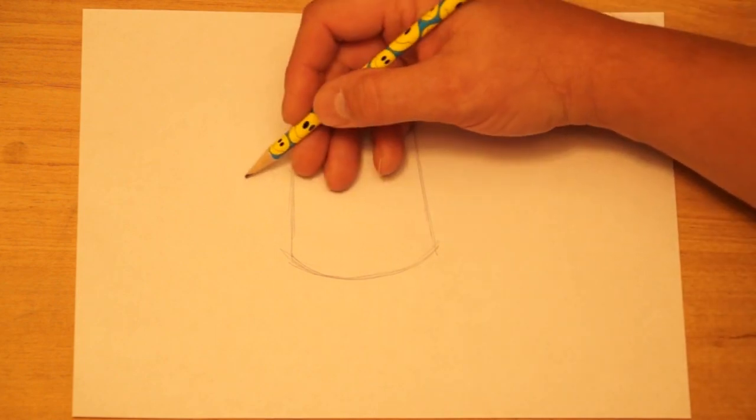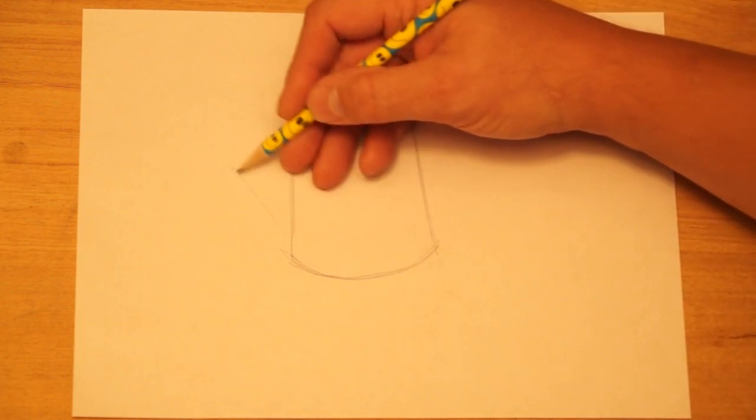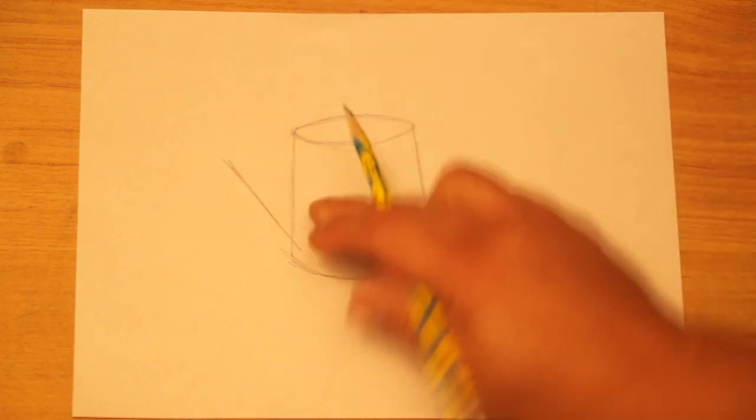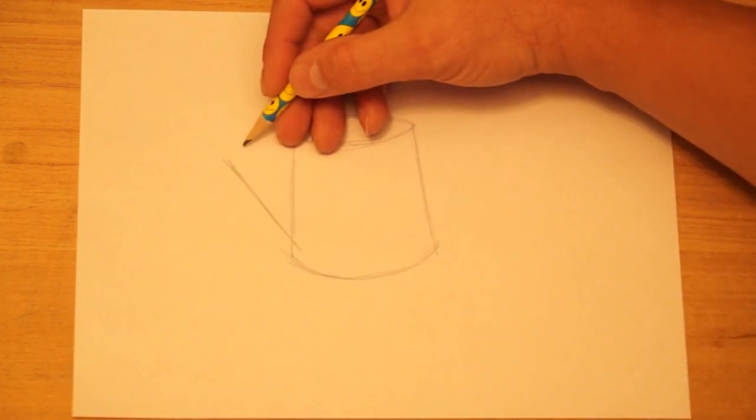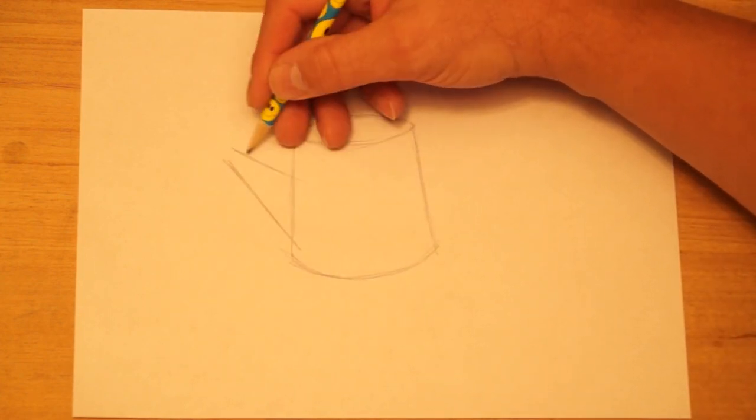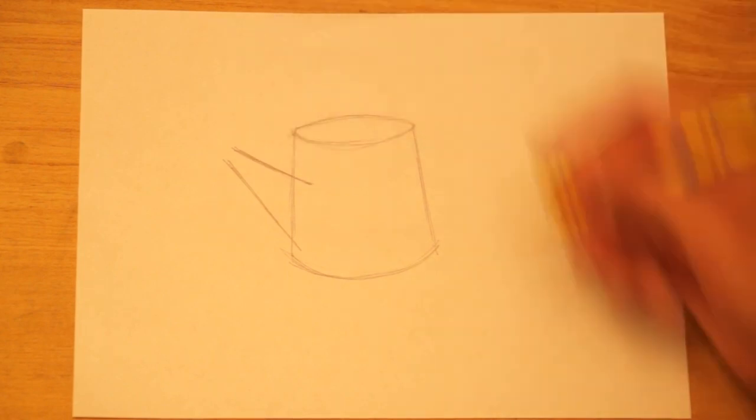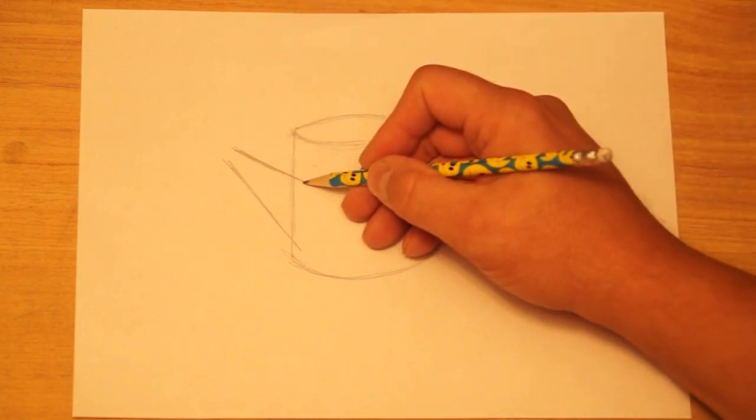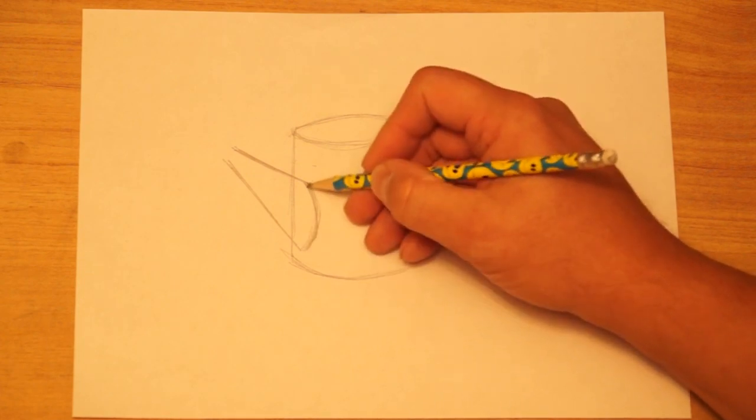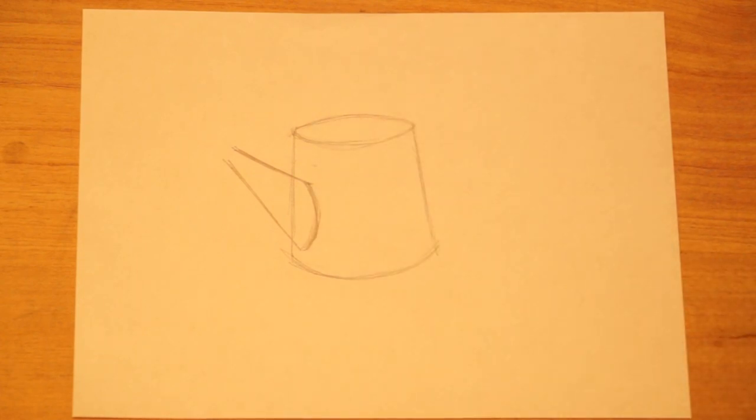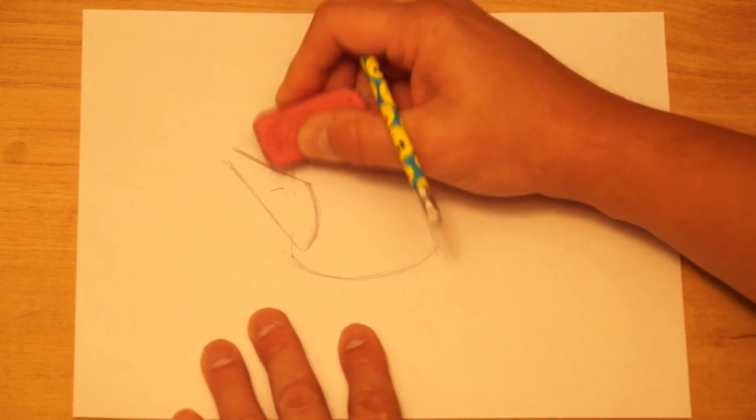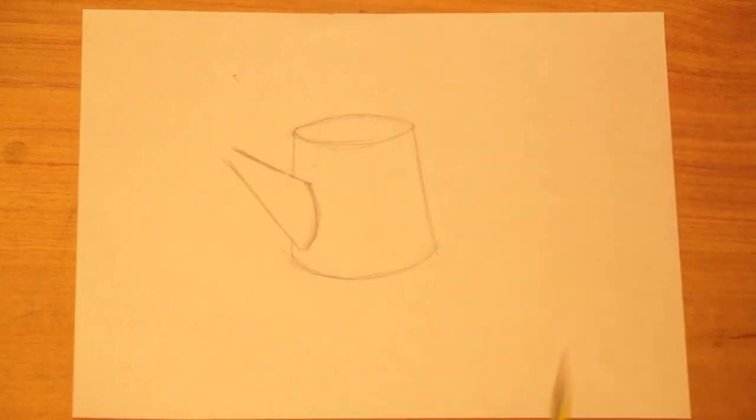And then we're going to add the spout where the water comes out of. I'm going to start with a slanted line going down from on this left side. And it starts off narrow out where the spout is, and it gets wider as it gets towards the can. I'm going to make a curve where this attaches to the actual can, and then I'll clean up where it overlaps the side of the can here.